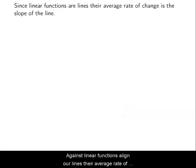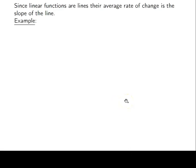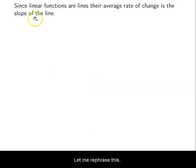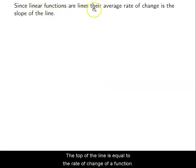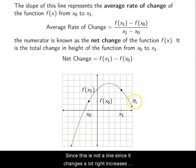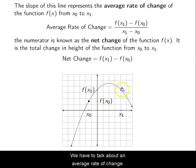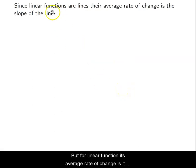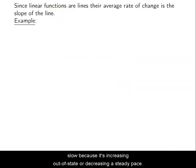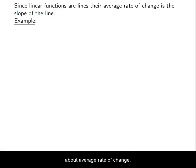So again, since linear functions are lines, their average rate of change is the slope of the line. The slope of the line is equal to the rate of change of a function. Since this is not a line — since it changes a lot, increases, decreases, and the rate of increase and decrease also changes — we have to talk about the average rate of change. But for a linear function, its average rate of change is its slope because it's increasing or decreasing at a steady pace.